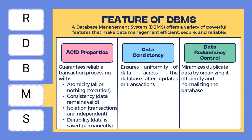Data redundancy control minimizes duplicate data by organizing it efficiently and normalizing the database. Redundancy means unnecessary duplication of data. DBMS reduces redundancy by storing data in a normalized form using multiple related tables instead of repeating the same information. This helps in saving storage space, preventing inconsistency and making data maintenance easier. For example, instead of storing the department name repeatedly for every student, store it once in a department table and refer to it using a department ID.